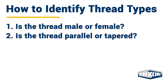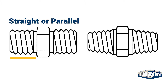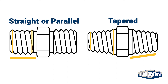Step 2: Is the thread parallel or tapered? If the diameter stays the same over the length of the threads, it's parallel, also known as straight threads. Tapered threads decrease in diameter. If you're not sure, use a pair of calipers and measure the diameter at the top and bottom of the fitting.